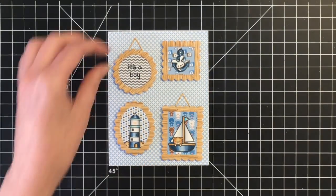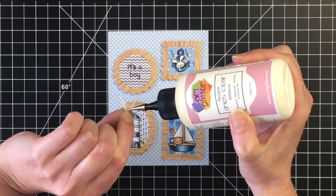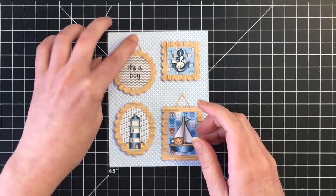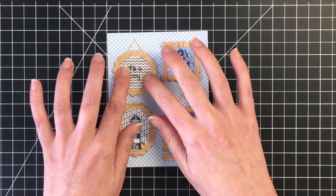Then I'm going to add a little bow on top of the one with the sailboat and a little circle that looks like a nail for the circular one.